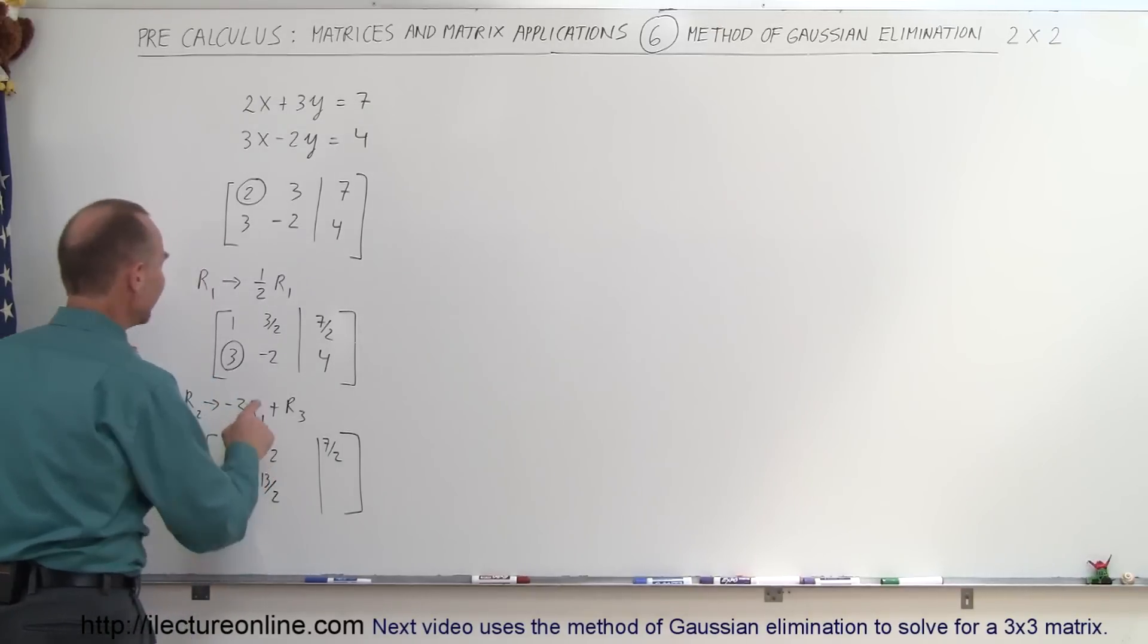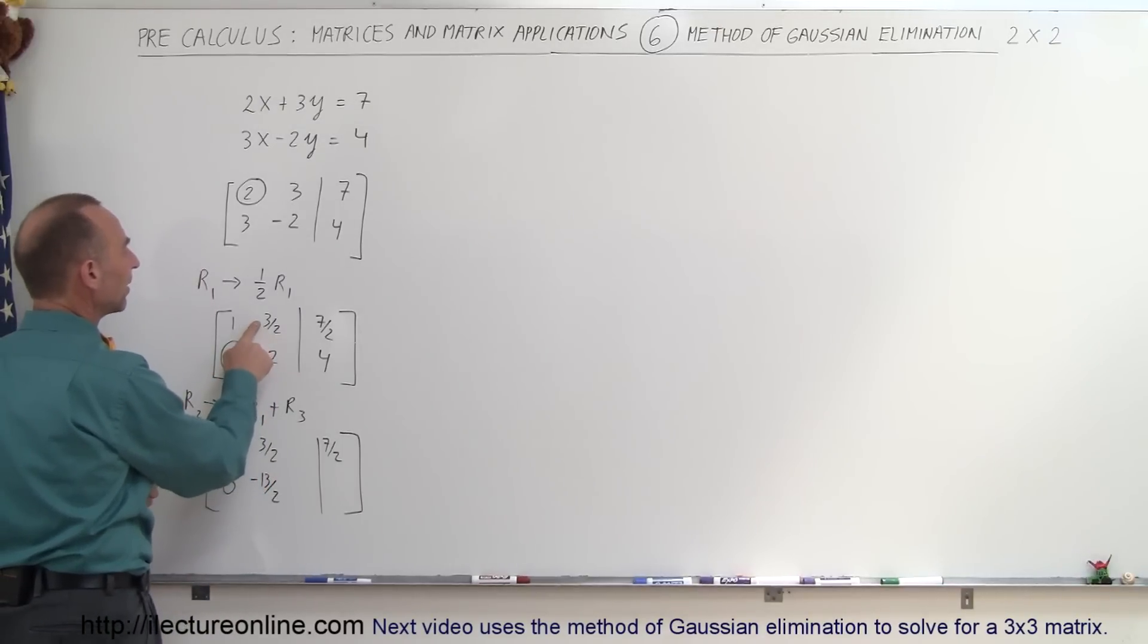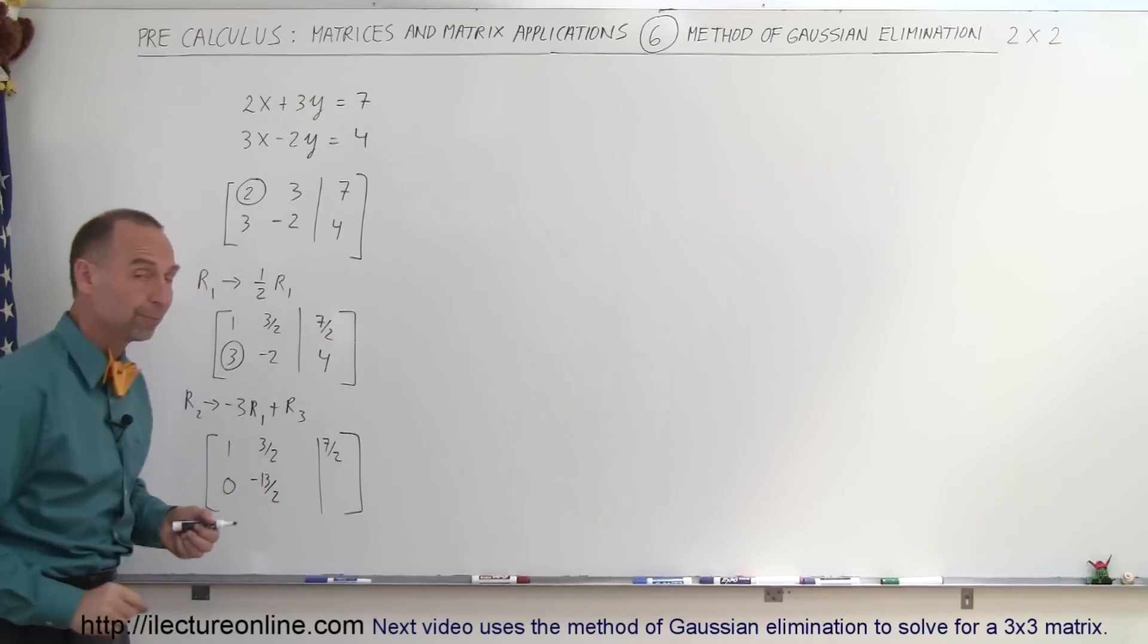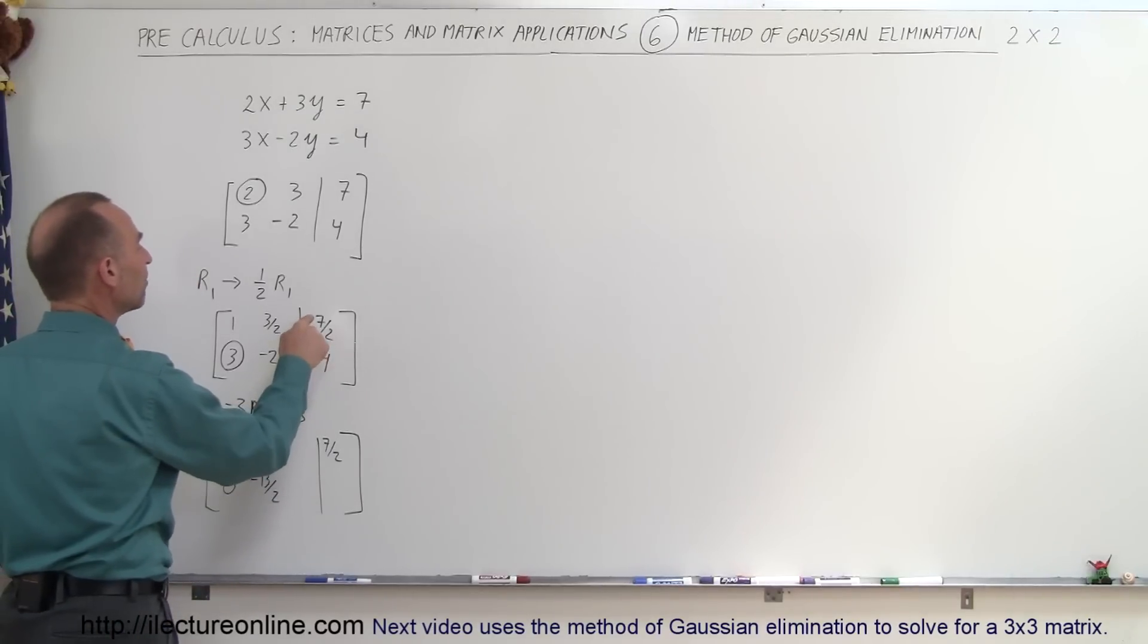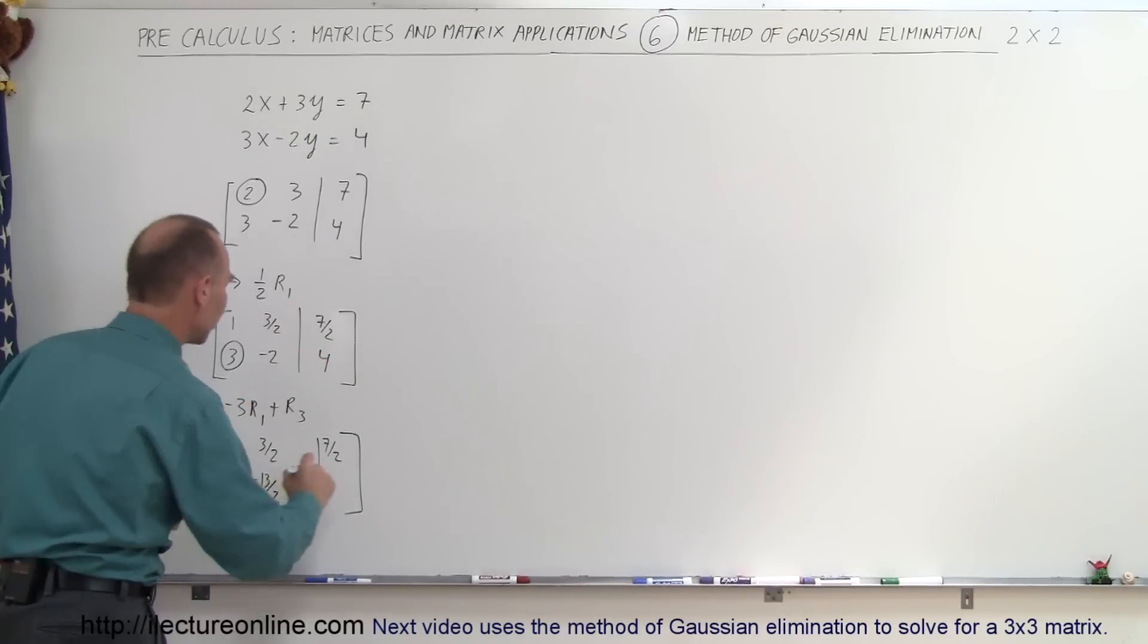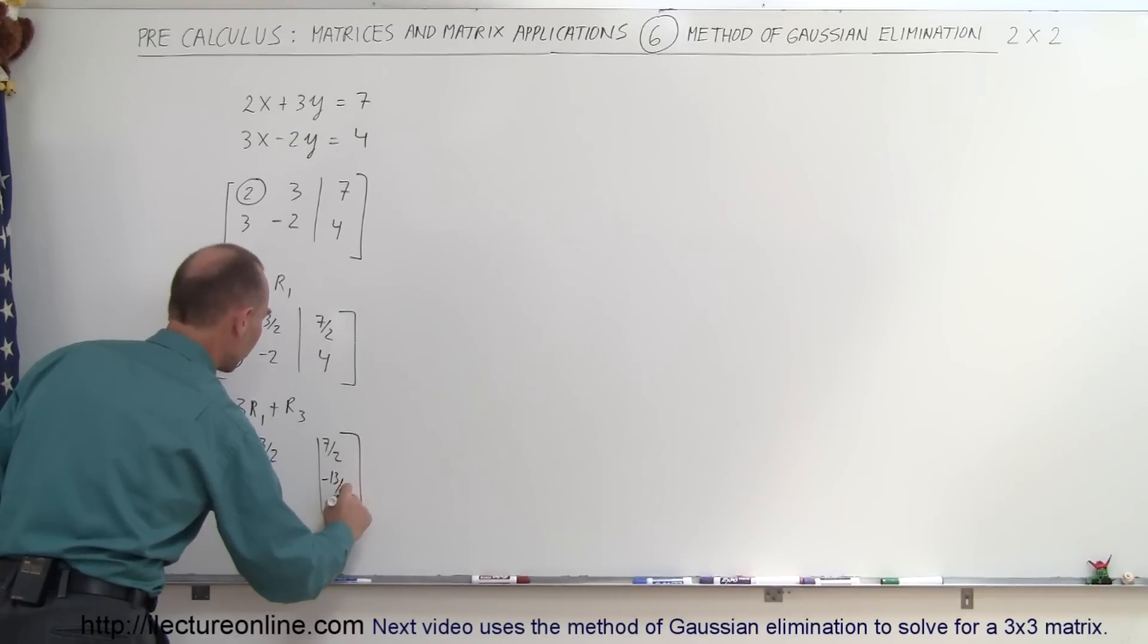So again, negative 3 times this gives me minus 9 over 2, add it to minus 2, that's minus 4 over 2. Minus 9 plus minus 4 is minus 13 over 2. And finally for the last number here, negative 3 times this is minus 21 over 2. Add it to 4, which is plus 8 over 2. Minus 21 plus 8 is minus 13 over 2.